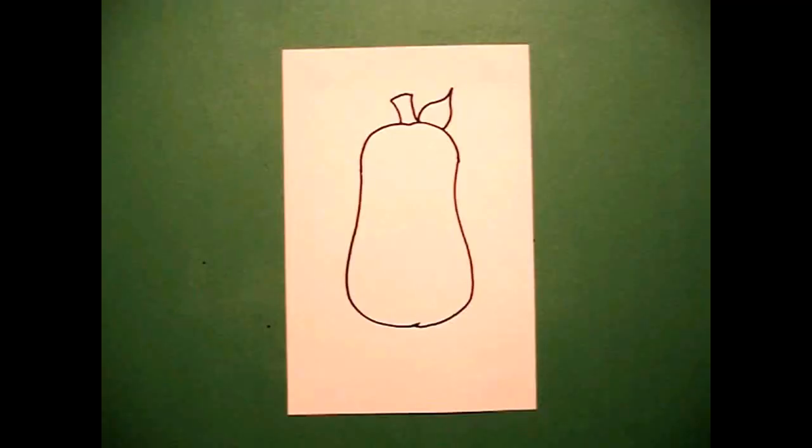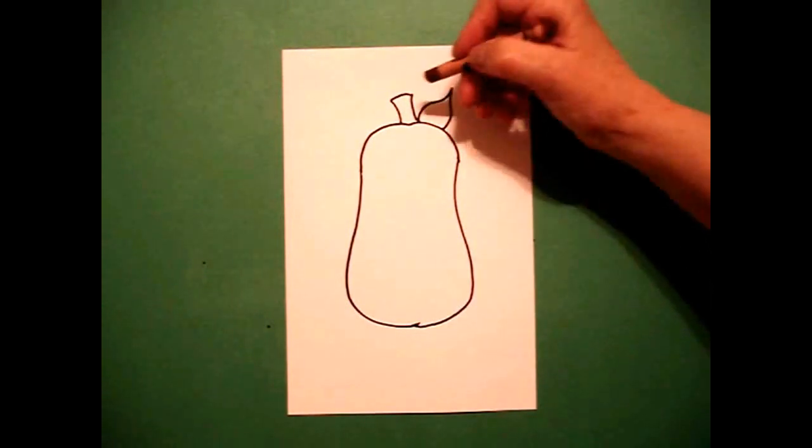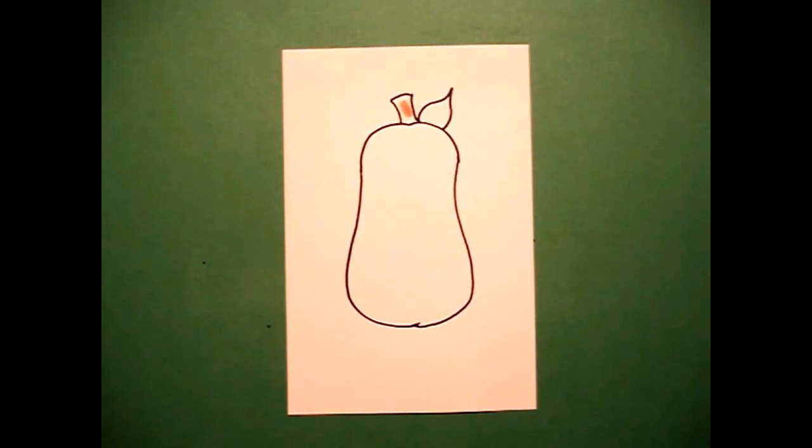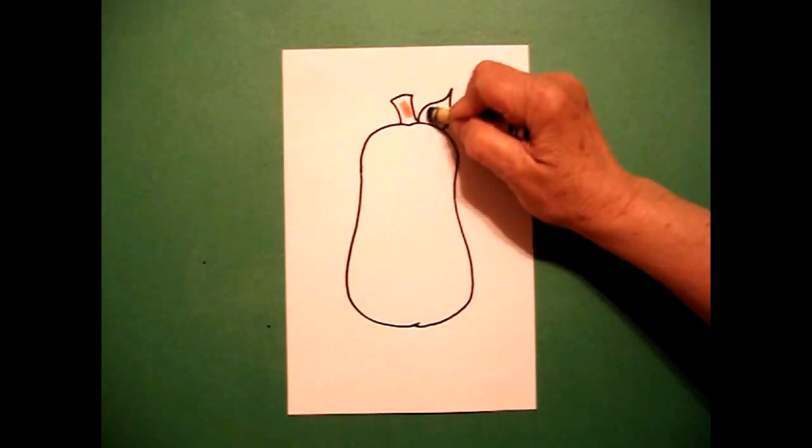Okay, let's color it in. First thing I'm going to do is color my stem brown and then I'm going to color my leaf green.